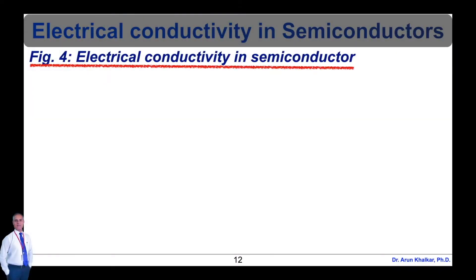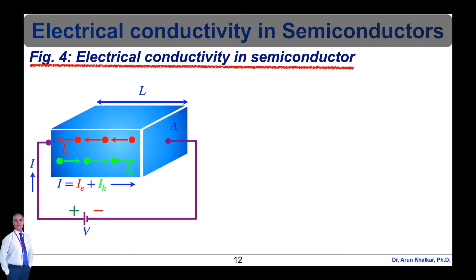In a semiconductor, the conduction band electron and valence band hole participate in electrical conduction. To obtain an expression for electrical conductivity, consider an intrinsic semiconductor bar connected to an external battery as shown in figure number 4. If a potential difference is applied across the semiconductor, it generates an electric field. This causes electrons to move towards the positive terminal and holes towards the negative terminal of the source.